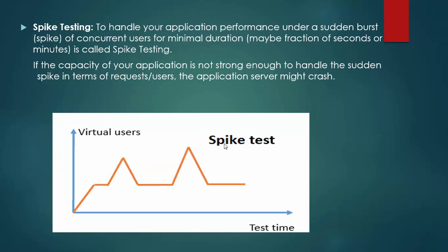3. Spike testing. Sometimes it can be seen that any application is getting a sudden burst or spike of concurrent users for minimal duration, maybe a fraction of seconds or minutes. If the capacity of your application is not strong enough to handle the sudden spike in terms of requests and users, the application server might crash. Hence it is always recommended to prepare your application with respect to performance for these type of situations by performing spike testing for your application.